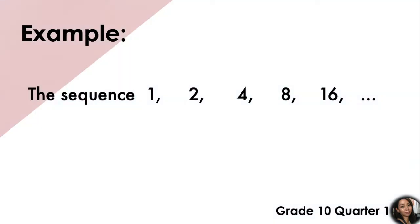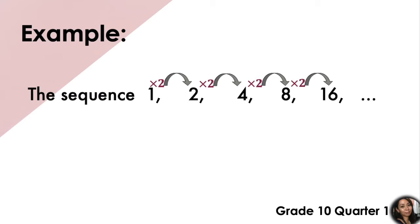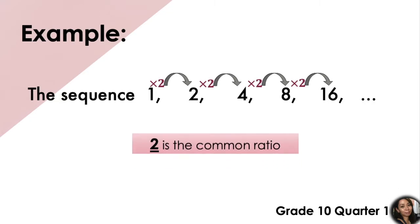If we try to multiply our first term by 2, we get the next term. Multiply that 2 by 2, we get the third term. Multiply it by 2, we get the fourth term. And multiply it by 2, we have our fifth term. In this case, 2 is what we call the common ratio.